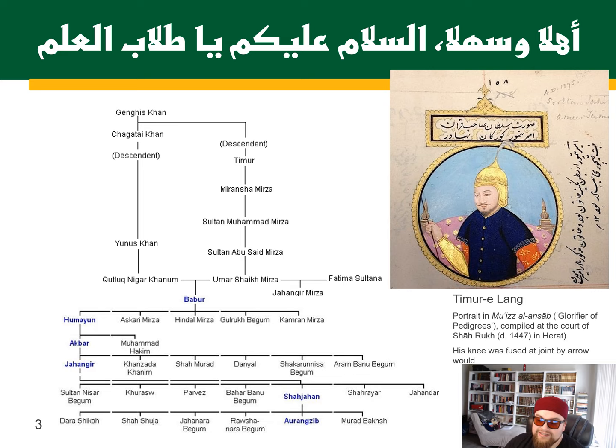You have Babur, the conqueror we talked about before — the founder, if you will, of the Mughal Empire. And you have Humayun, Akbar, Jahangir, Shah Jahan, and Aurangzeb. All of them are direct descendants of Genghis Khan and Timur Lang.